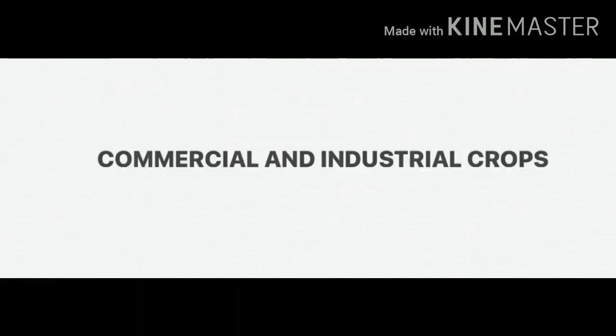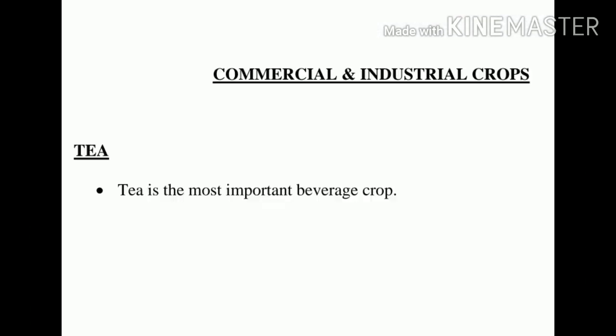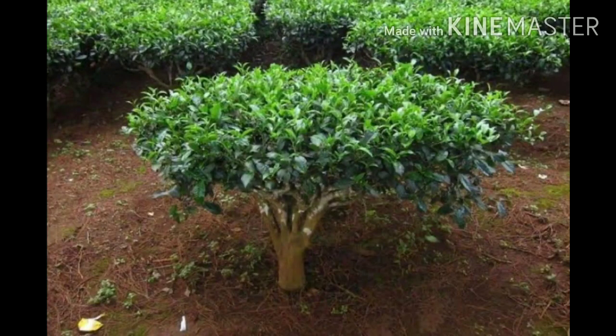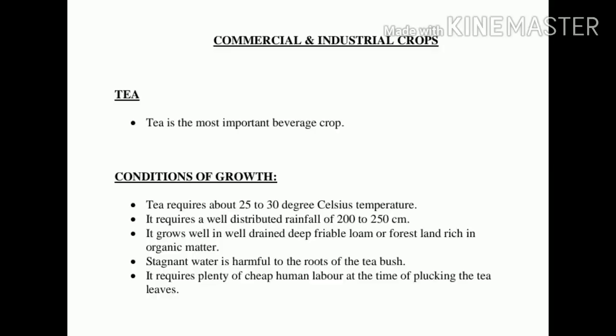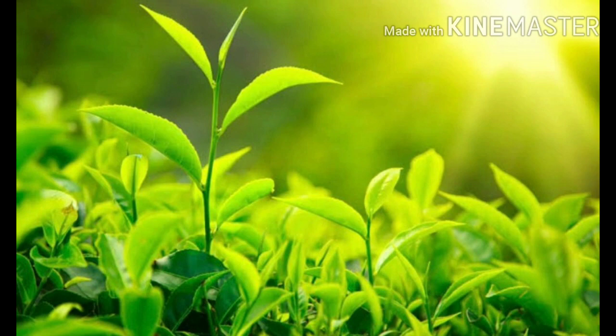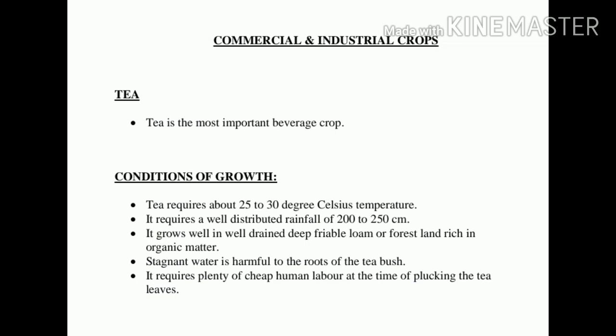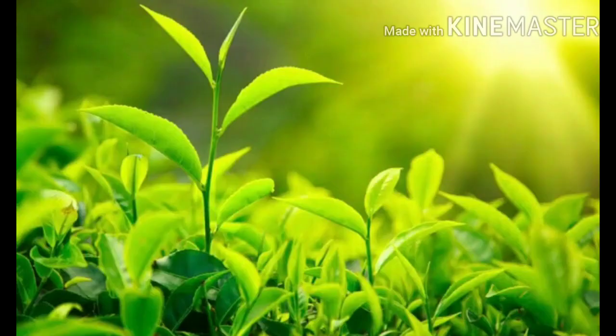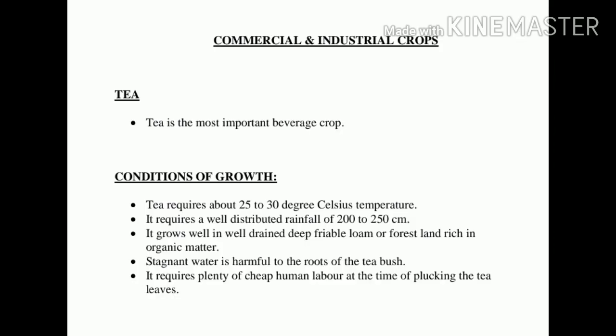Now let us talk about some of the major commercial and industrial crops. Firstly, tea. Tea is the most important beverage crop. Tea requires about 25 to 30 degrees Celsius temperature and a well-distributed rainfall of 200 to 250 cm. It grows well in well-drained, deep friable loam or forest land rich in organic matter. Stagnant water is harmful to the roots of the tea bush and as such it is grown on hill slopes. It requires plenty of cheap human labour at the time of plucking the tea leaf. This labour is generally provided by women and children.